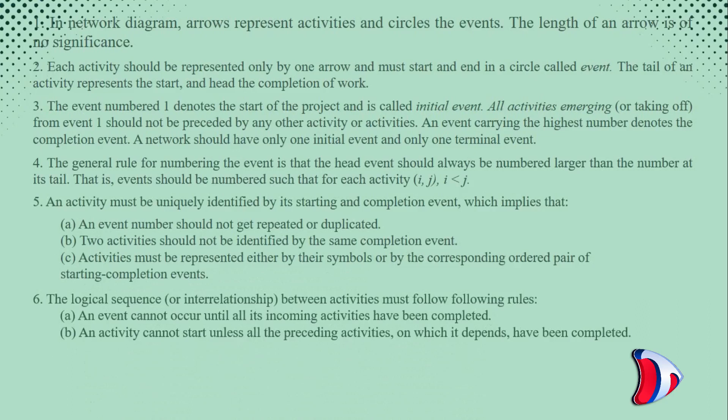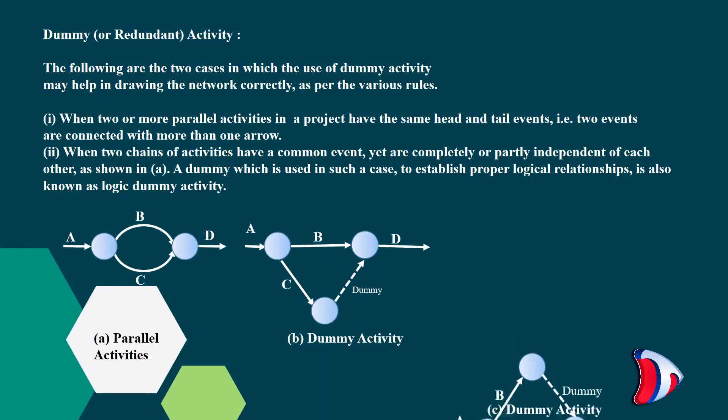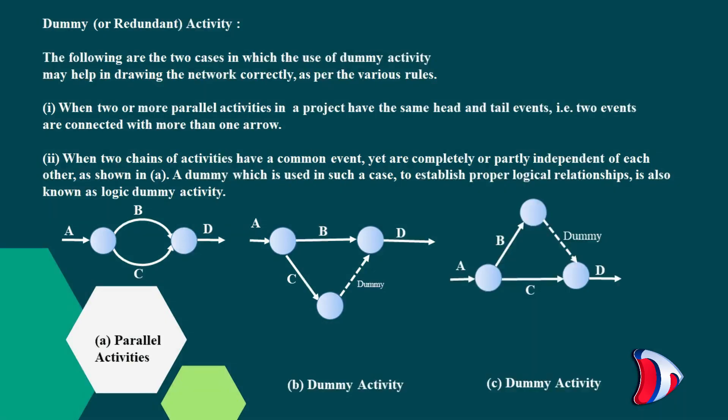Dummy or redundant activity. The following are the two cases in which the use of dummy activity may help in drawing the network correctly as per the various rules. First, when two or more parallel activities in a project have the same head and tail events. Second, when two chains of activities have a common event yet are completely or partly independent of each other.